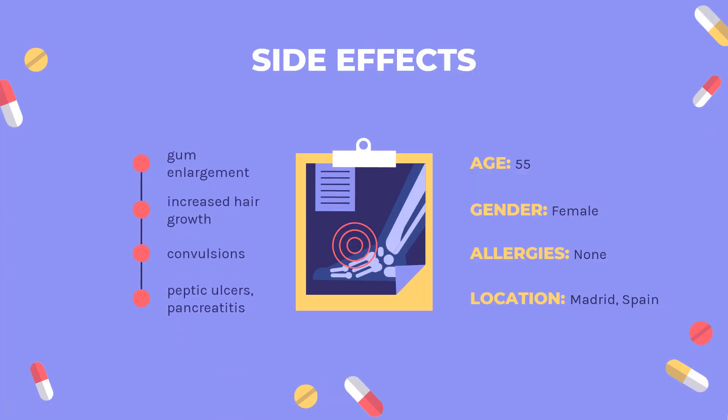Side effects of cyclosporine can include gum enlargement, increased hair growth, convulsions, peptic ulcers, pancreatitis, fever, vomiting, diarrhea, confusion, increased cholesterol, trouble breathing, numbness and tingling particularly of the lips, itchiness, high blood pressure, calcium retention possibly leading to hyperkalemia, kidney and liver dysfunction, burning sensations at fingertips, and an increased vulnerability to opportunistic fungal and viral infections.